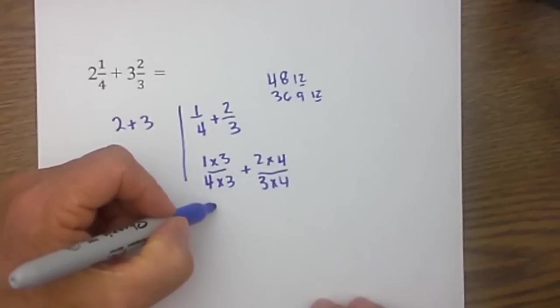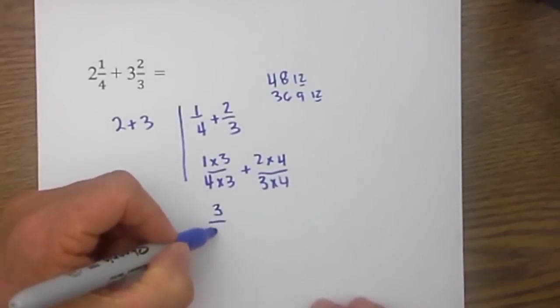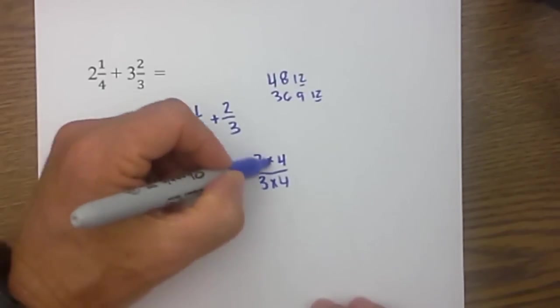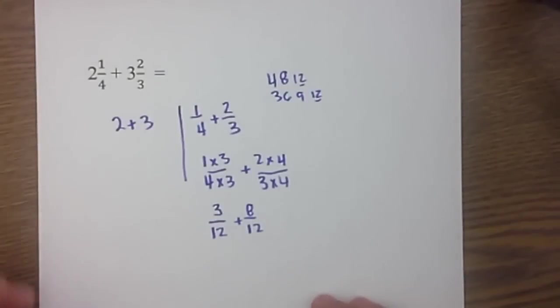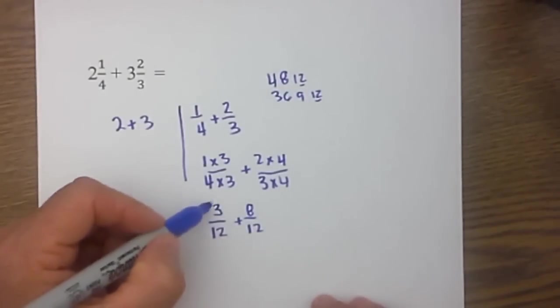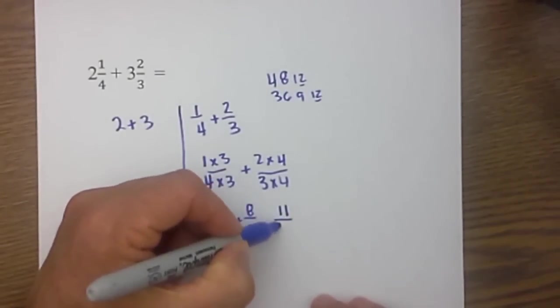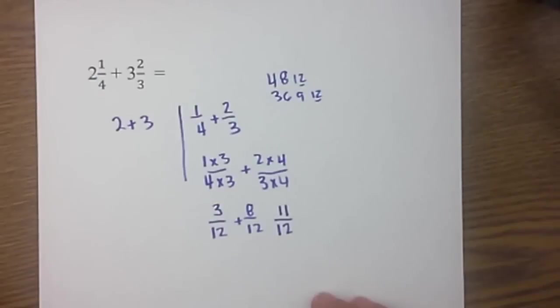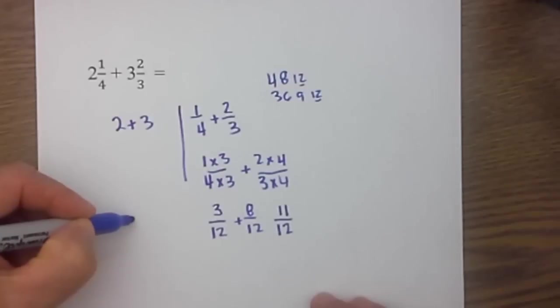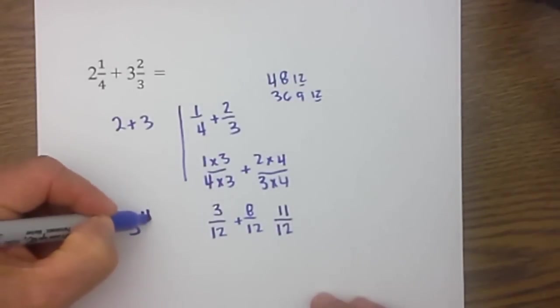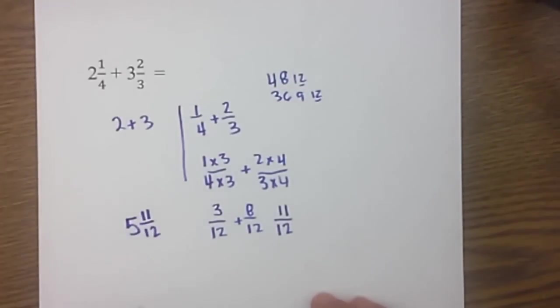I then multiply it out 3 times 1 is 3, 4 times 3 is 12, 2 times 4 is 8 and this will be 12. I then add them 8, 9, 10, 11, 12 and in this example I do not have an improper fraction. So I can just add the whole numbers 2 plus 3 is 5 and then add the fraction to it. So that is my answer 5 and 11 twelfths.